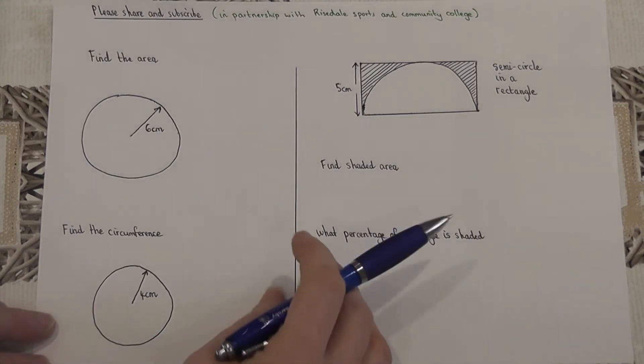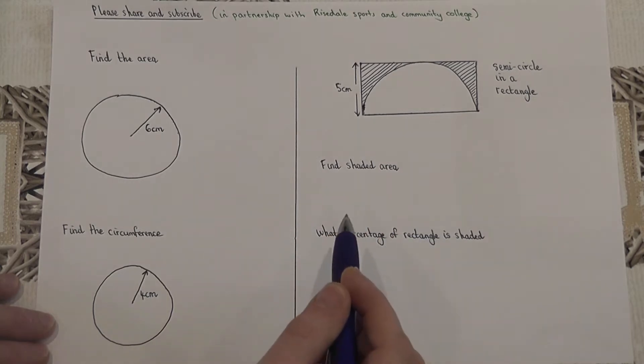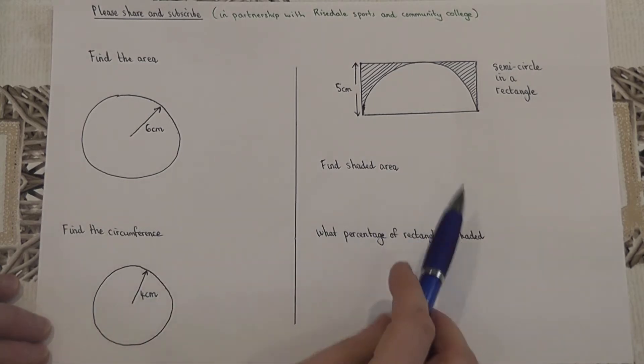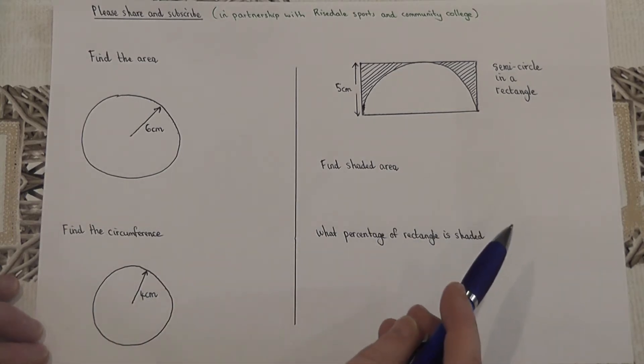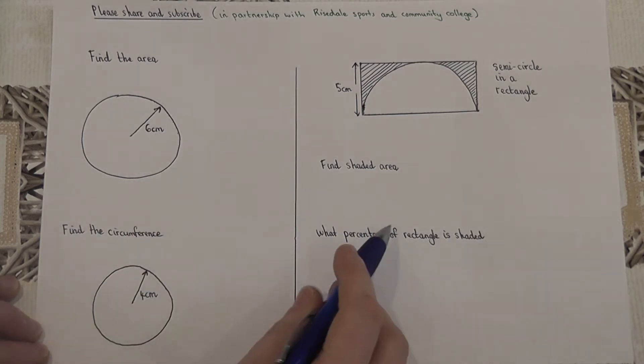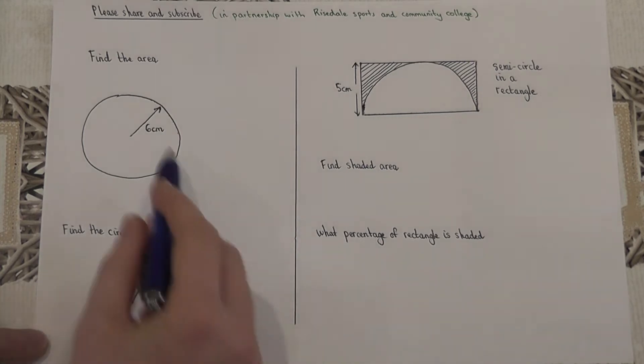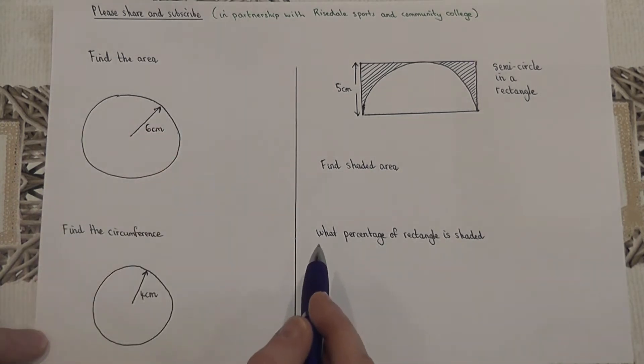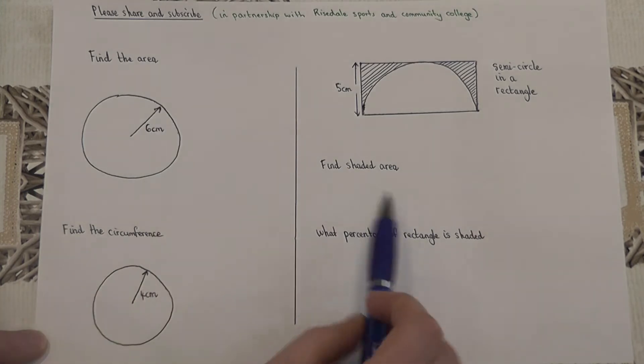This video looks at some essential examples involving circles and semicircles. The first one looks at the two basic formulas required.